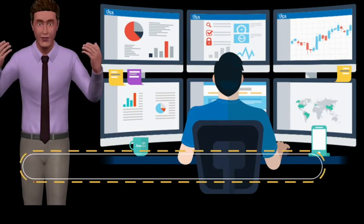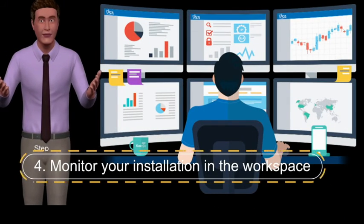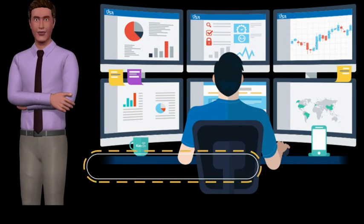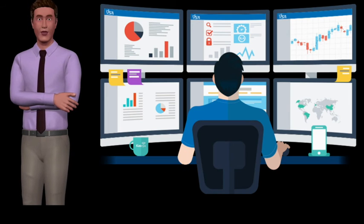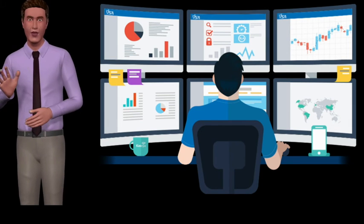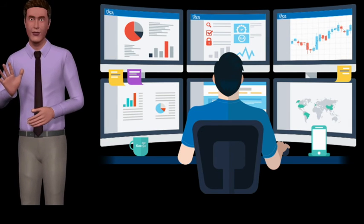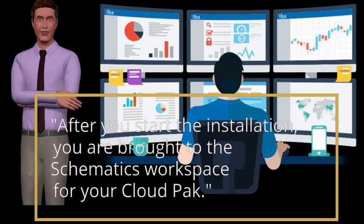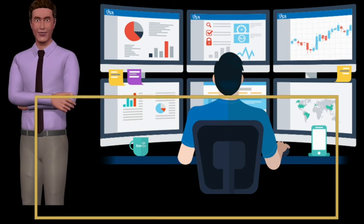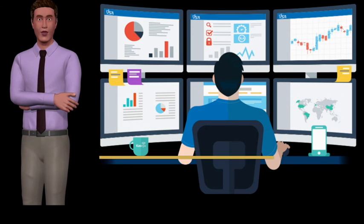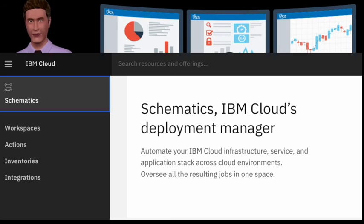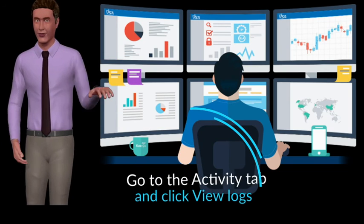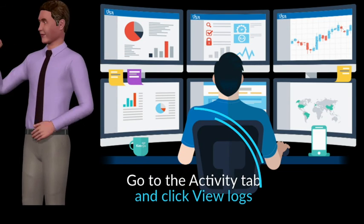Step 4: Monitor your installation in the workspace. From this stage, the installation will take approximately 1.5 hours to complete, which includes the installation of IBM Cloud Platform Foundational Services. After you start the installation, you are brought to the Schematics workspace for your Cloud Pak. You can track progress by viewing the logs — go to the Activity tab and click View Logs.